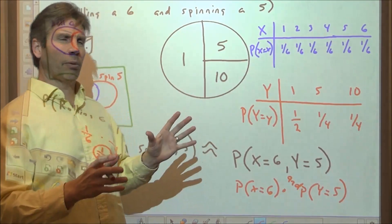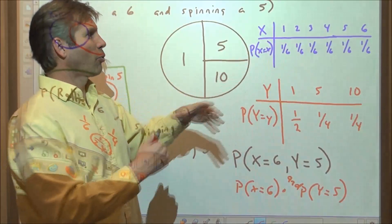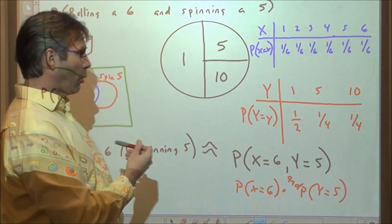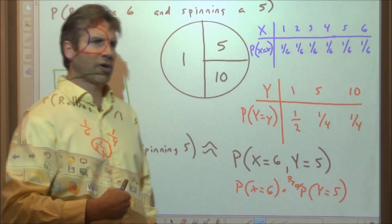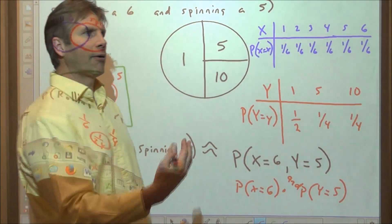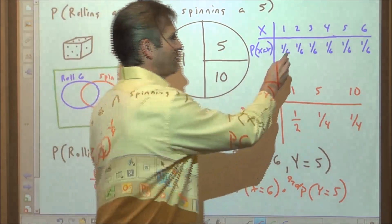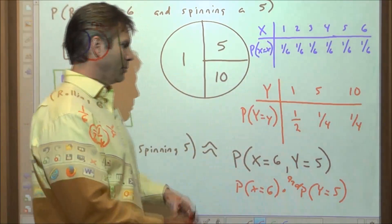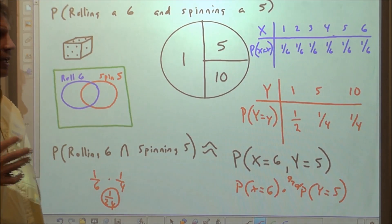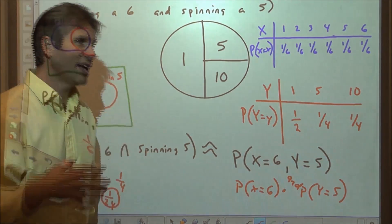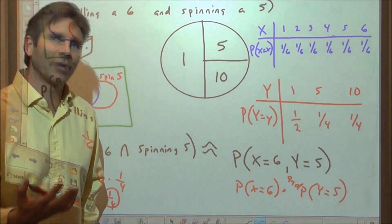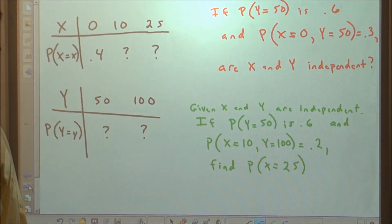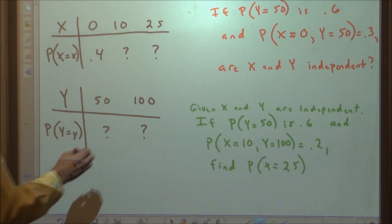What we're dealing with here are random variables. In statistics and probability, a random variable must take on a numerical value — it can't be categorical like whether someone is a US citizen or not. Our spinner and die both have numerical outcomes. These are discrete random variables: their outcomes are countable and follow a prescribed probability distribution.